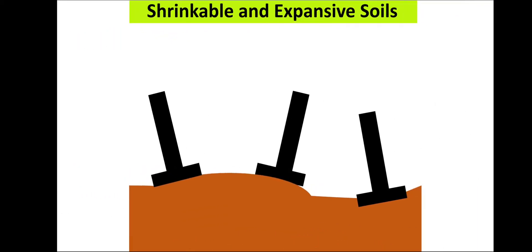Shrinkable and expansive soil — the best example is black cotton soil, which swells upon entry of moisture and shrinks when moisture exits. This shrinking and expanding action puts a lot of stress on the footing and all structural components in direct contact with such soil. This erratic behavior can cause a large amount of stress onto the footing and may result in differential or non-uniform settlement.